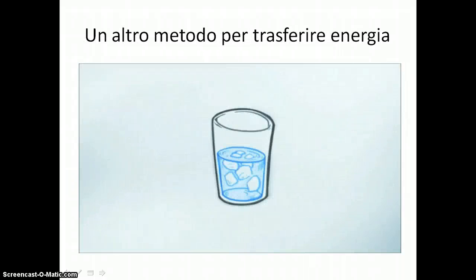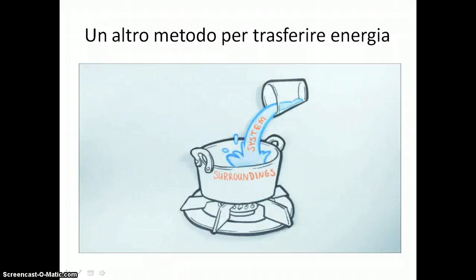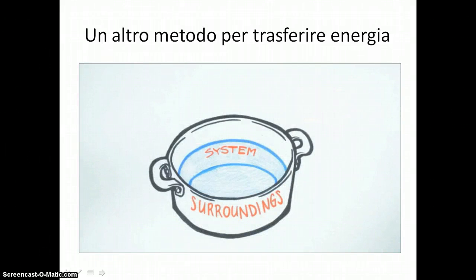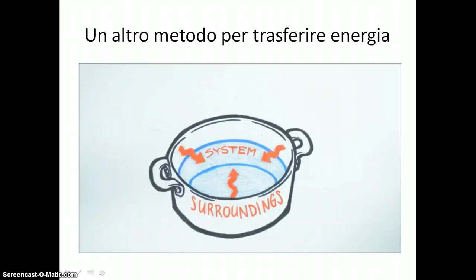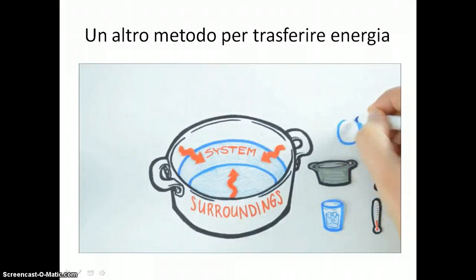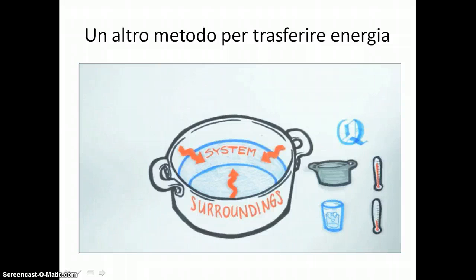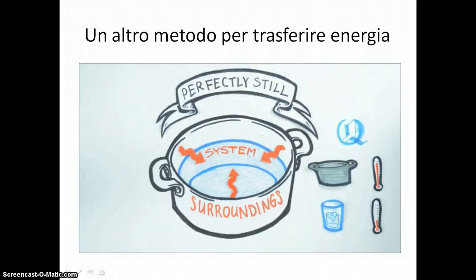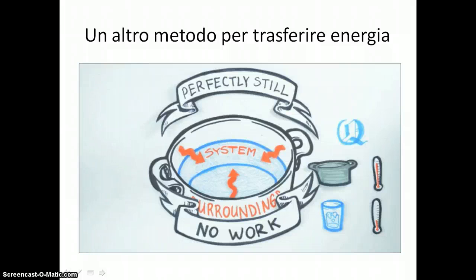Let's say we have some cool water — take that as our system — and we place that water in contact with something at a higher temperature, say a hot kitchen pan. Then we know from experience that there is energy transfer from the surroundings, the hot pan, to the system, the water. This is energy transfer due to a temperature difference, which we typically symbolize using the letter capital Q. Energy transfer in these cases is very different from the energy transfer by the process of work. Notice here, to our eye, the water can be sitting perfectly still with no displacements, so there can be no work done by the surroundings on the system.